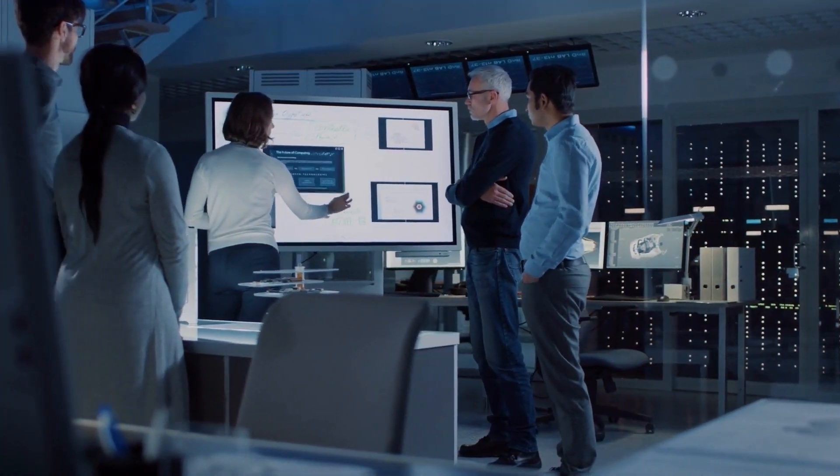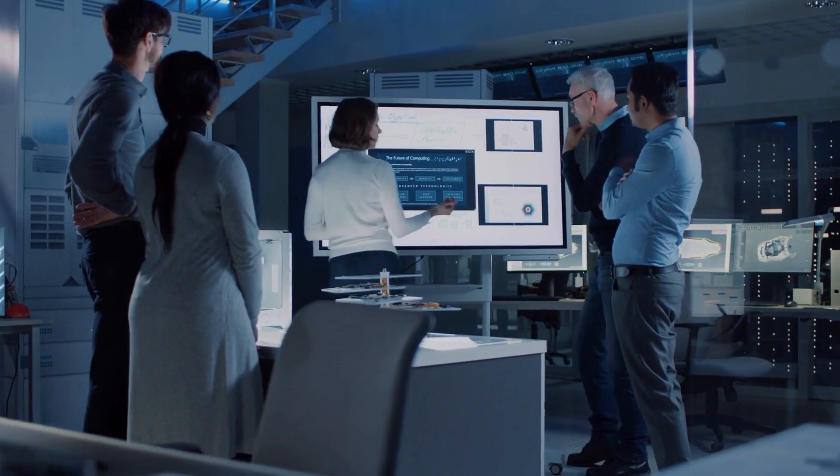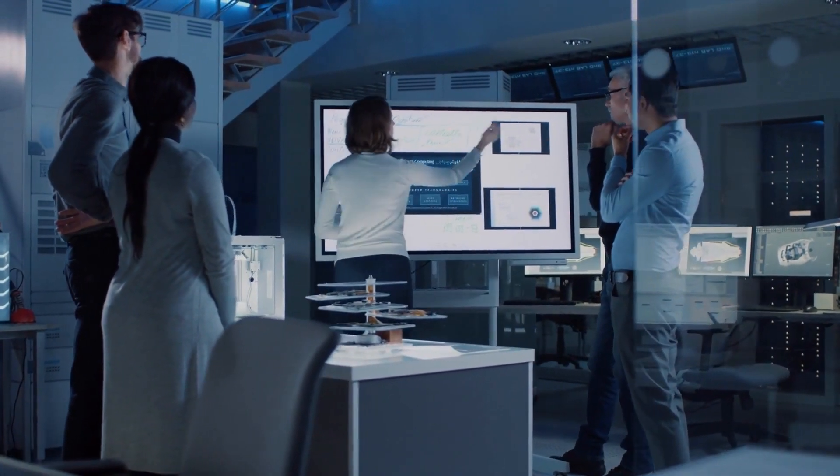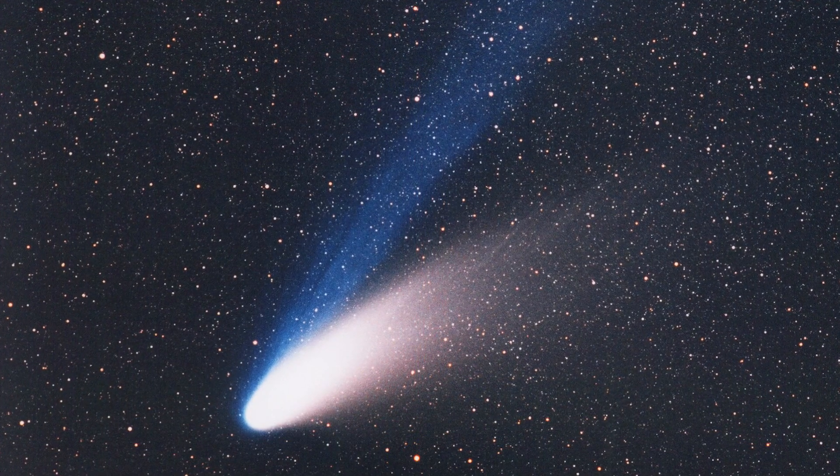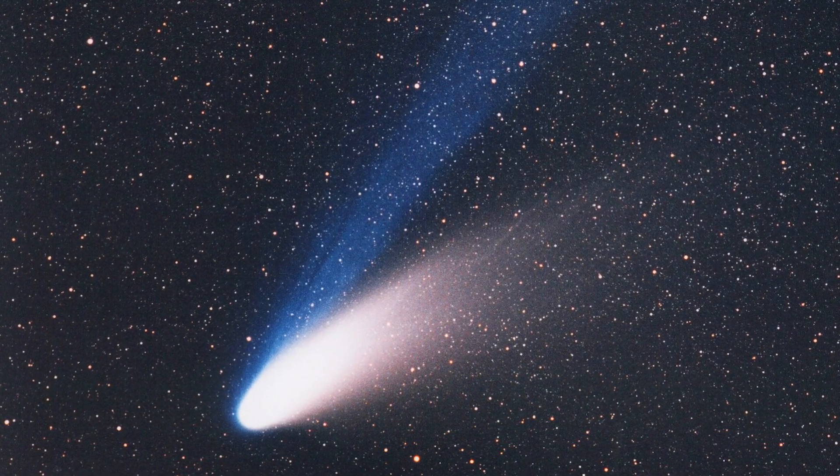Traditionally, comets are named after their discoverers or discovery teams, paying homage to their contribution. For instance, the well-known comet Hale-Bopp is named after its co-discoverers, Alan Hale and Thomas Bopp.